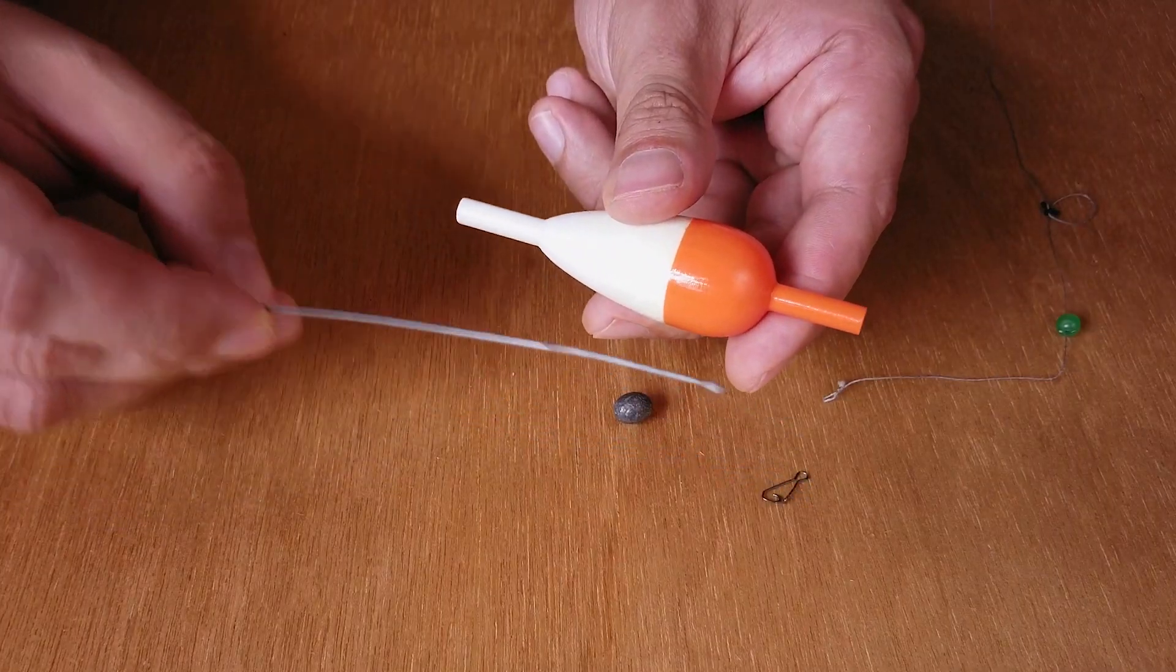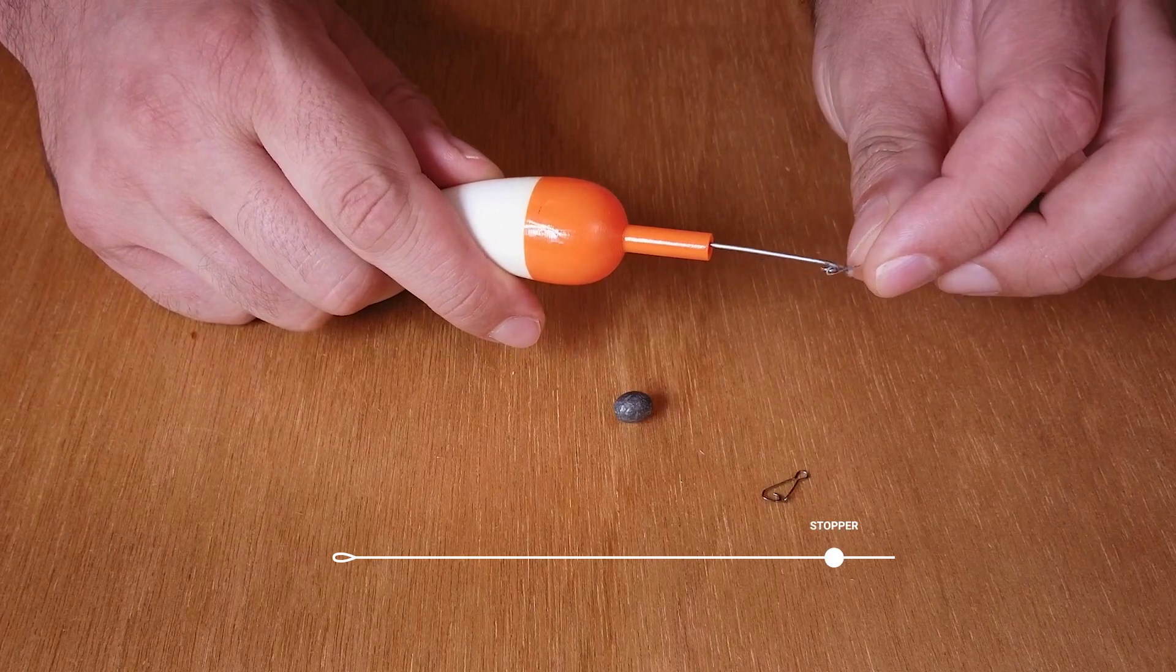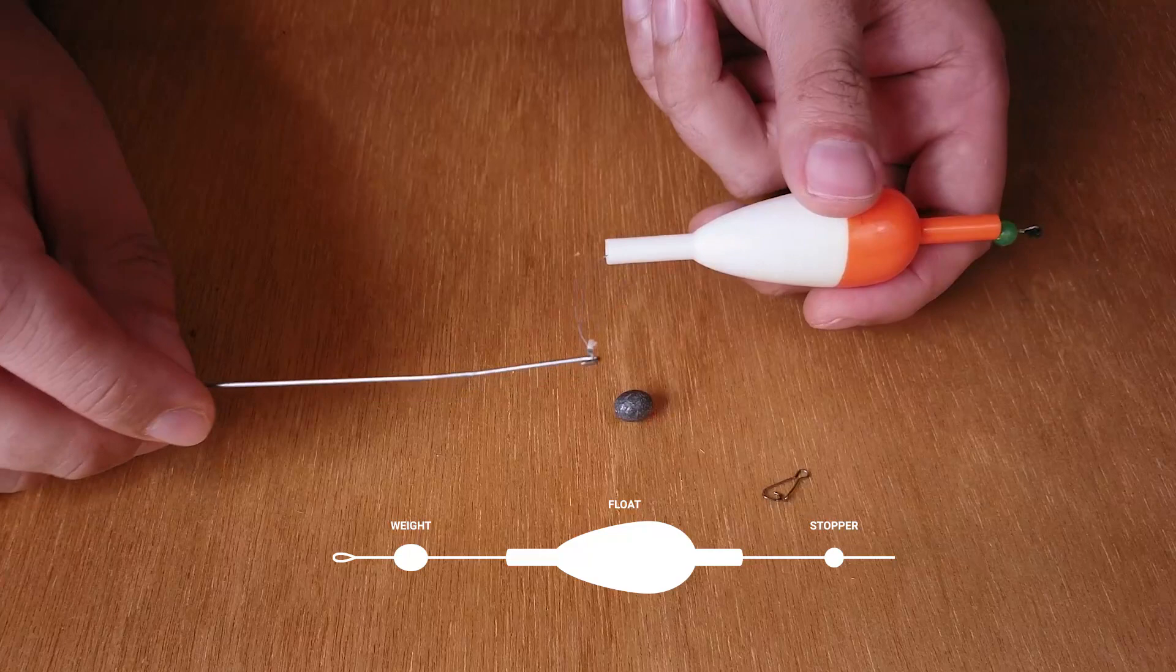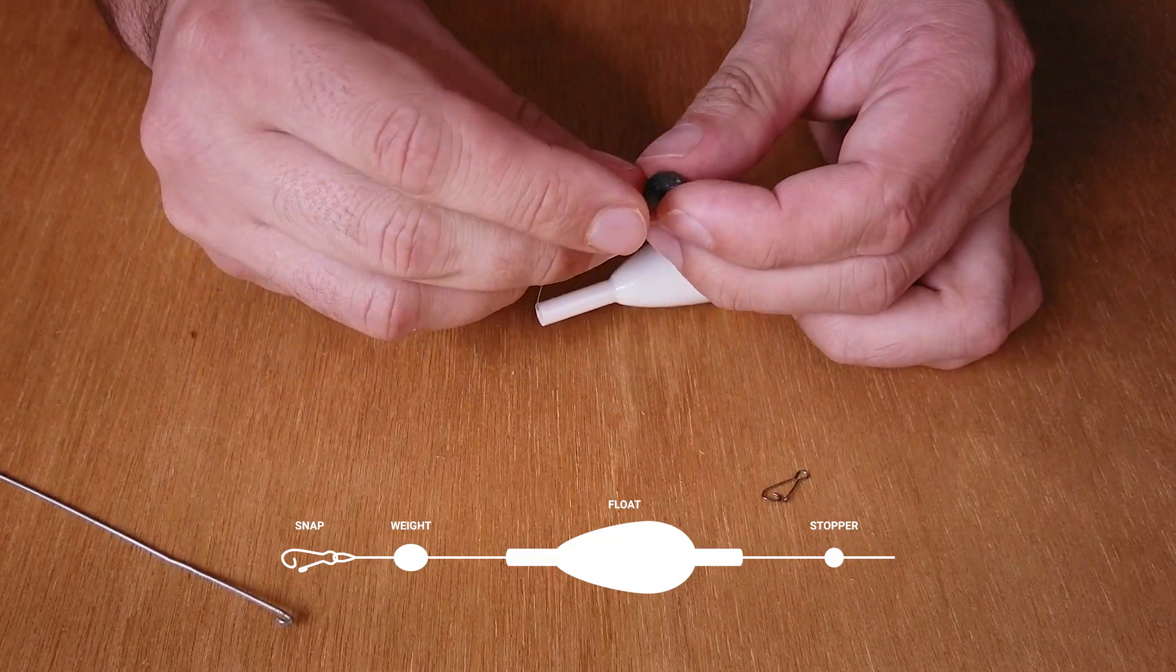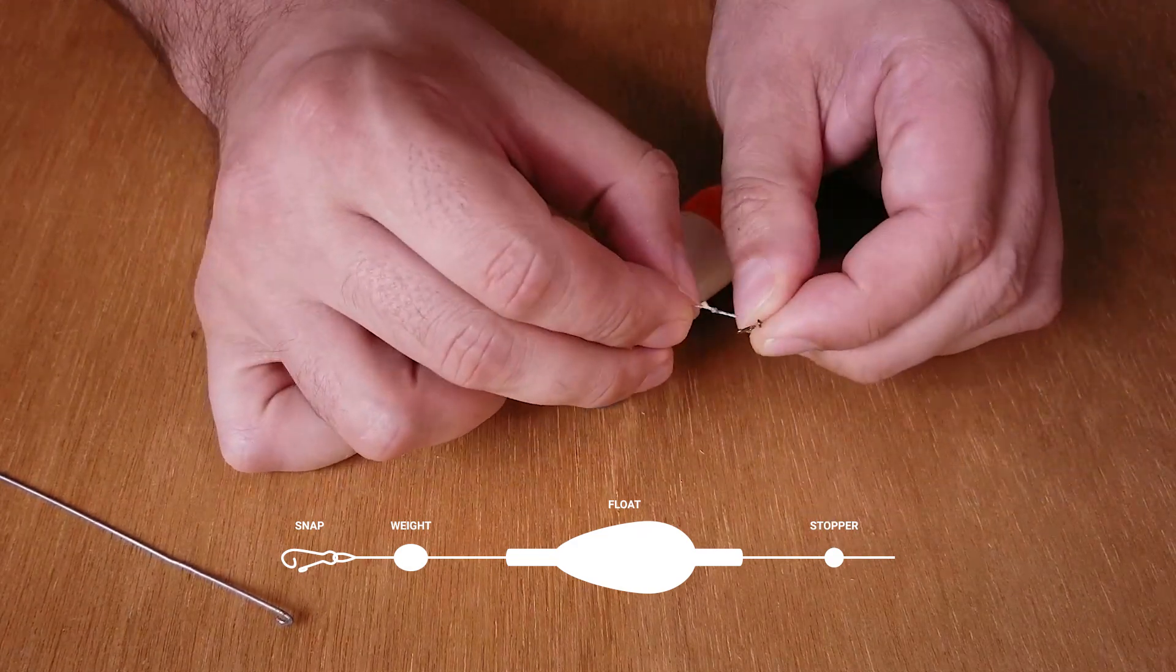I started assembly and testing after the coating was dry to the touch. The float stop goes first onto the line. In my case the stop is just a rubber band with a bead. Then goes the float, followed by a weight and a snap. The snap will prevent all the pieces from sliding down onto the leader with the hook.